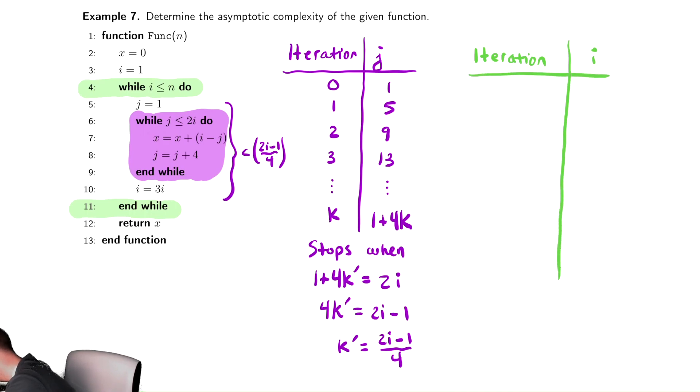So iteration and I. For this iteration table, I need to keep track of what does I start at? I starts at one, and it's updated by multiplying by three. Therefore, after one iteration, it will be three. After two iterations, it will be three times three, which is three squared. After three iterations, it'll be three times three squared, which is three cubed. After, oh god, panic. We've already used K. We need another letter here.